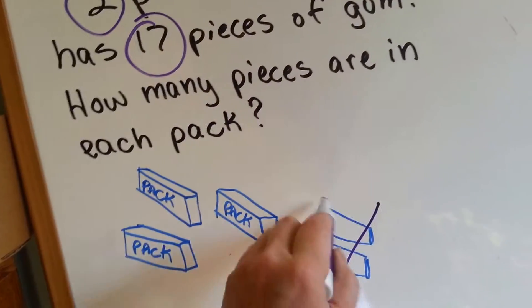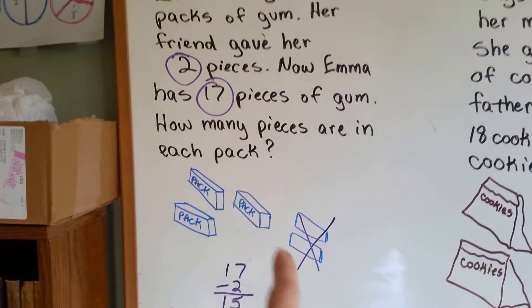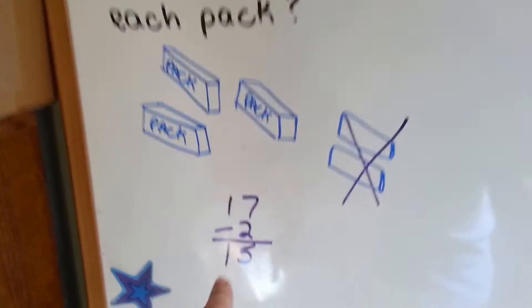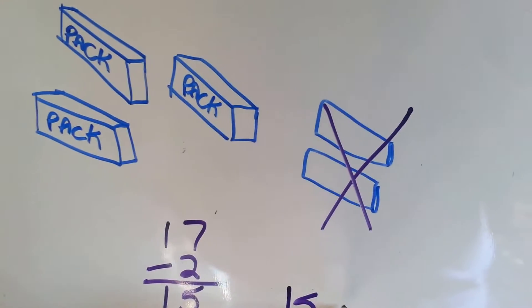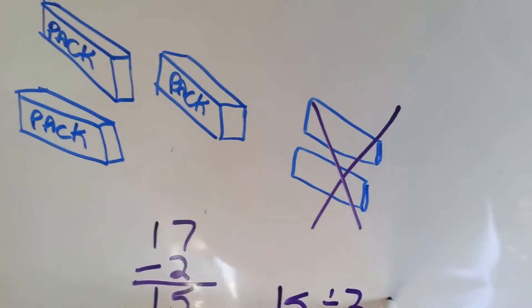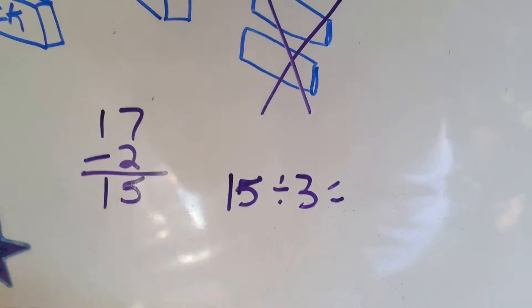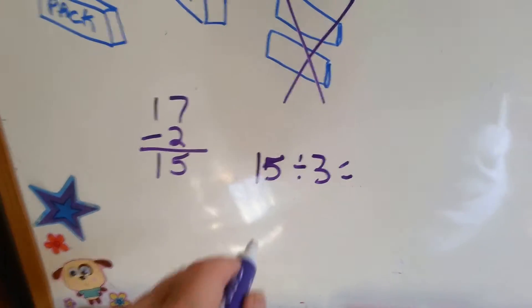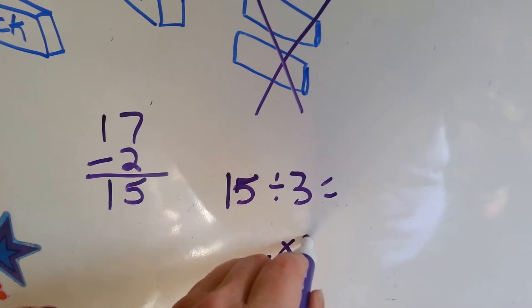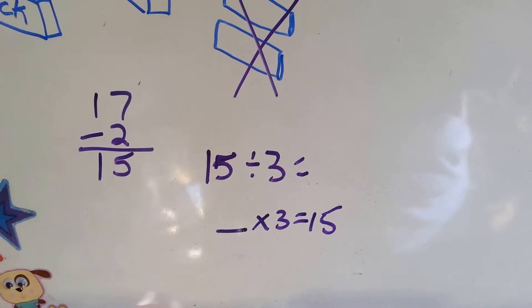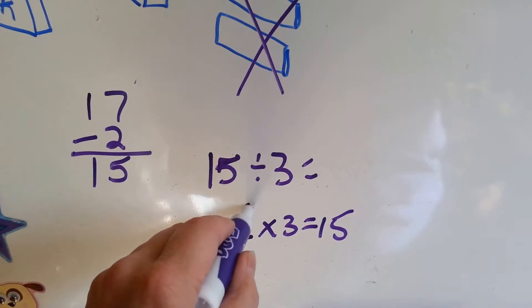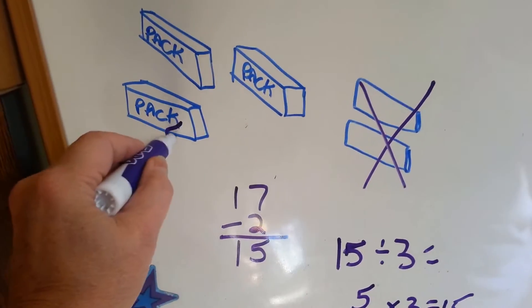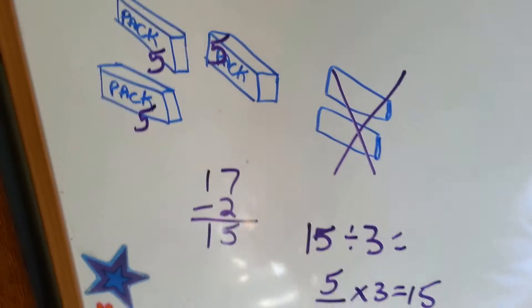So, now that we've taken away the 2 that her friend gave us, we know that these three packs of gum have 15 pieces in them. So, what we need to do is say 15 divided by 3 equals what? What is 15 divided by 3? Do you know what something times 3 equals 15? It's 5. 5, 10, 15. So, each of these packs has 5 pieces of gum in them.